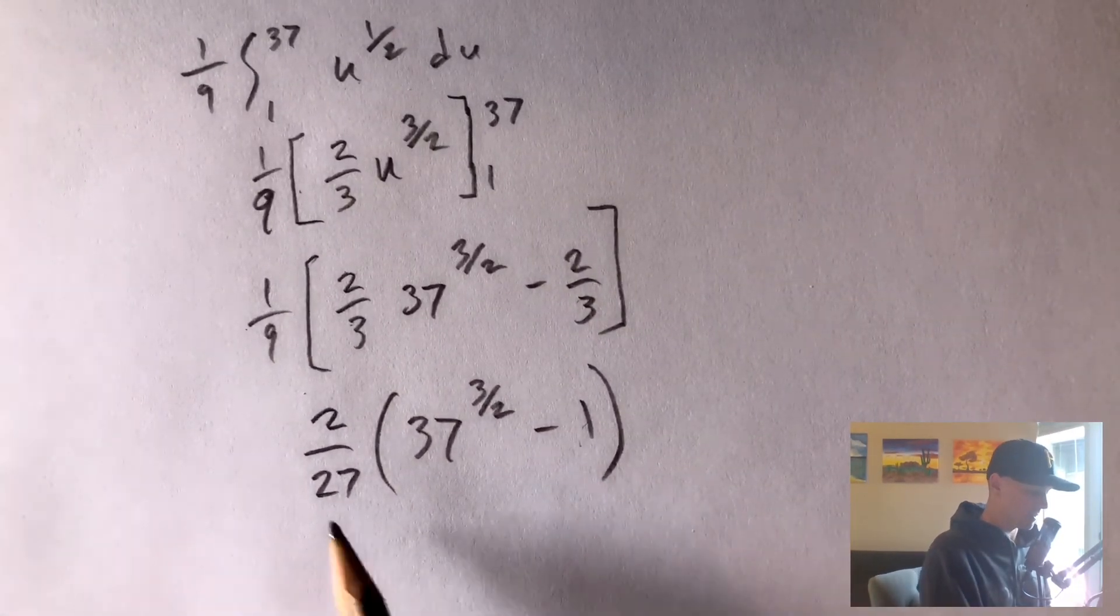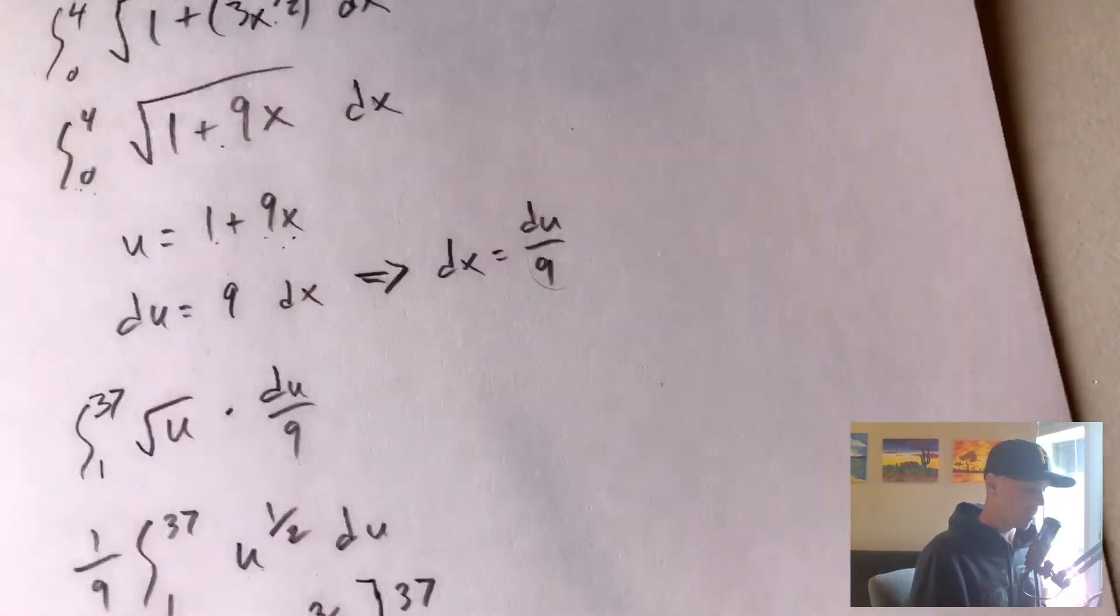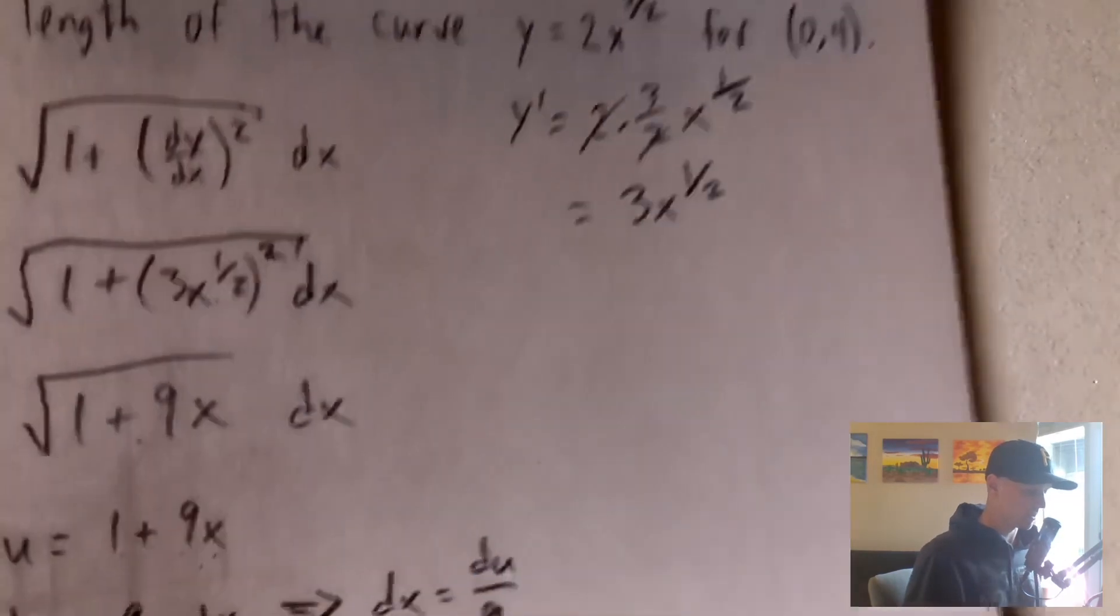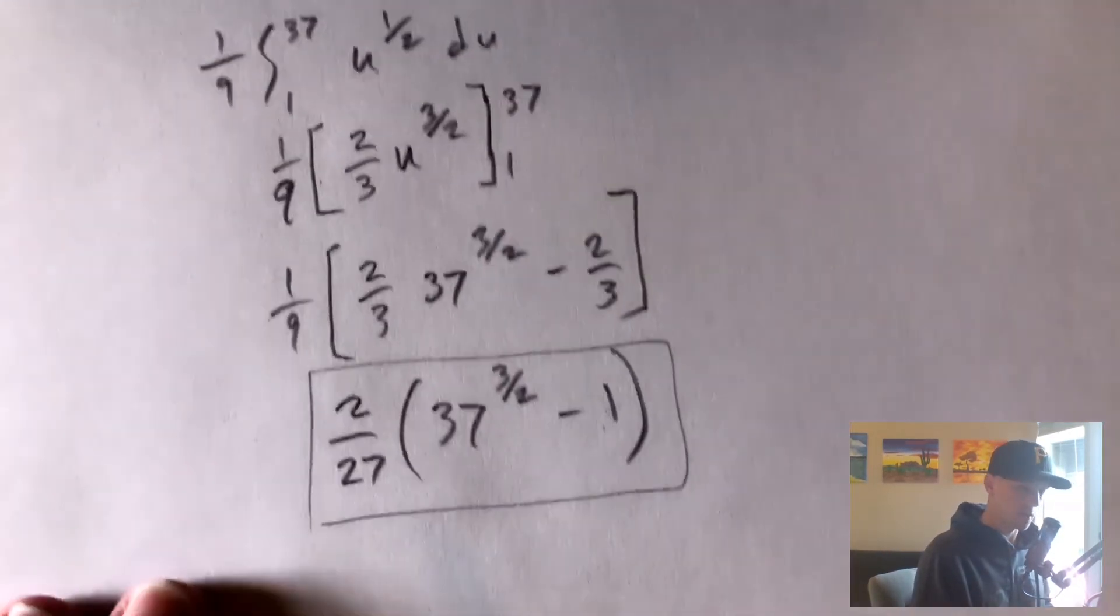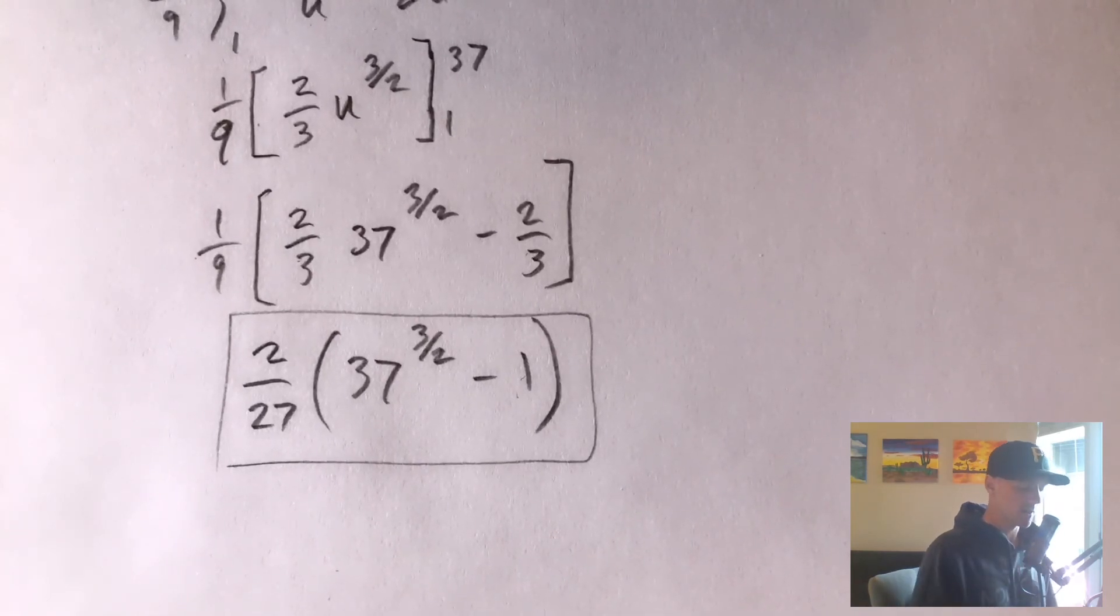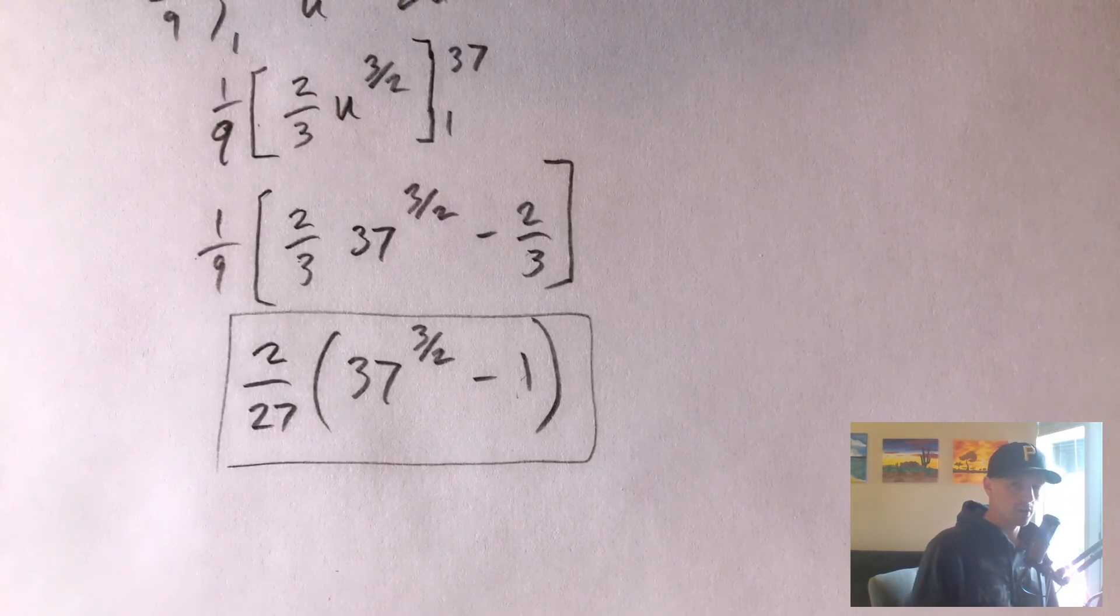So this is going to be the arc length of the function y equals 2x to the 3 halves between x equals 0 and x equals 4. It's going to be given by this. So like I said, this arc length formula is on my Calc 2 study guide. There's a link down in the description. I highly recommend checking that out. I'm going to have a bunch more videos on my channel showing you how to use all those formulas so you can really get your money's worth.